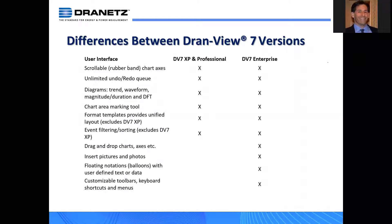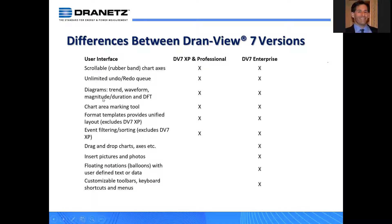Enterprise adds to that feature set with more advanced tools and annotation tools. In general, all versions include scrollable rubber band and chart accesses, undo and redo, diagrams, trends, waveforms, magnitude duration charts, a chart area marking tool, and templates for how you'd like to view the data — which you can save and recall later so you don't have to configure DranVue every time you start it. You can also have event filtering, which sorts by event type.